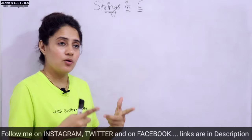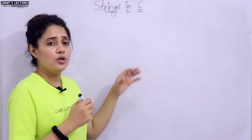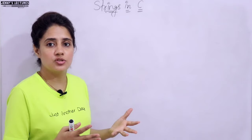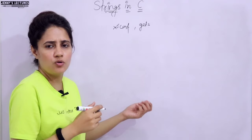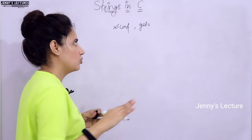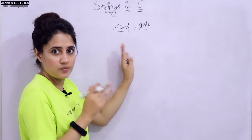In this video we will see how to initialize a string at run time, or you can say how to read a string. You can read or initialize a string at run time using standard functions: scanf as well as gets. getchar is also there, but getchar can only read one character, so you'd have to put it in a loop. We will discuss these two functions to read a string at run time, including the drawbacks and advantages of both.